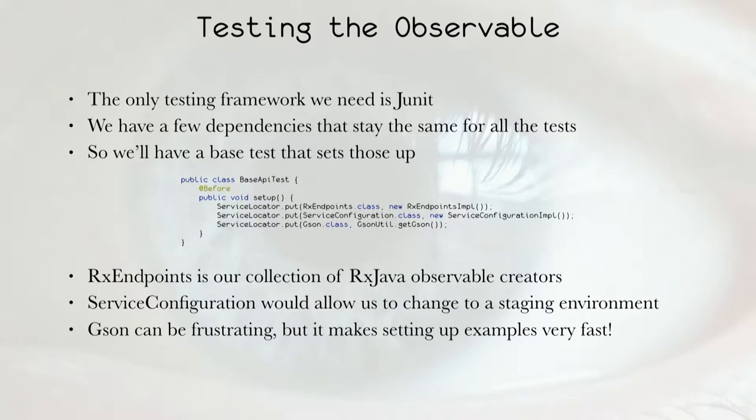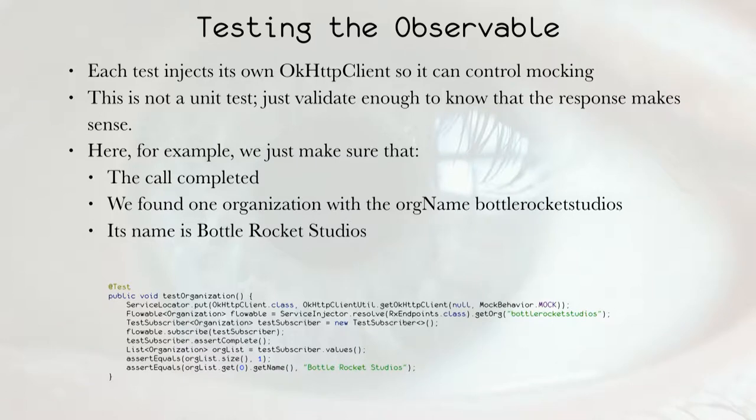We have a few dependencies that are going to stay the same for all the tests. So our base test is going to set those up in its before. So we're going to have our endpoints, we're going to have our service configuration, we're going to have JSON. Service configuration can let us change environments. Obviously, we don't have a staging environment for GitHub. At least I don't. JSON, again, is not a recommendation. It's just something that makes setting up examples super fast.